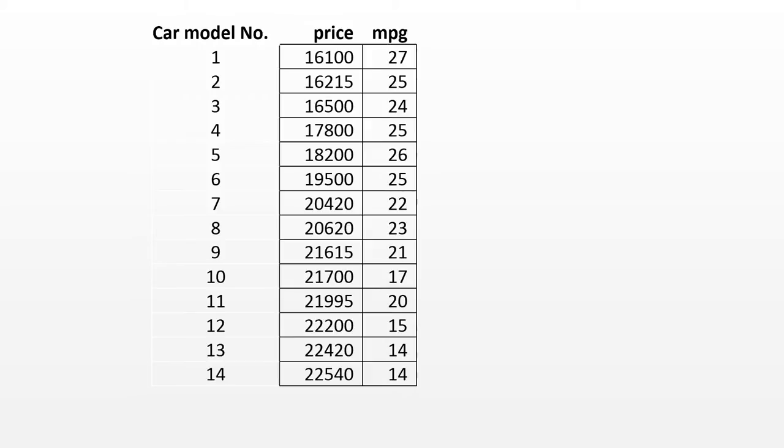So for instance, the individuals here are cars. There are 14 different car models. Now notice this is not a variable. This is just a convenient way of indicating what's going on. You could treat it as a variable. You could say car model number is a variable, but it's nothing you would analyze. It's just a way to keep track of the cases. Sometimes you'd say a subject number is this kind of a variable. In the data set, it's a variable, but you're not going to treat it as a variable for statistical analysis.